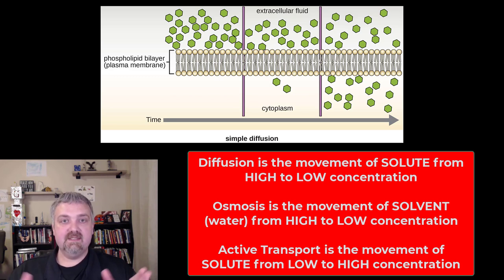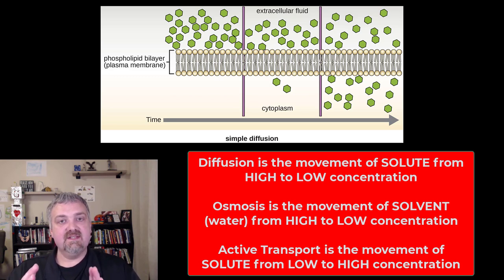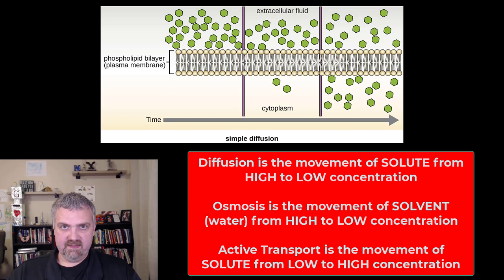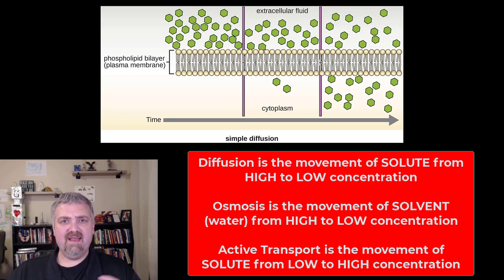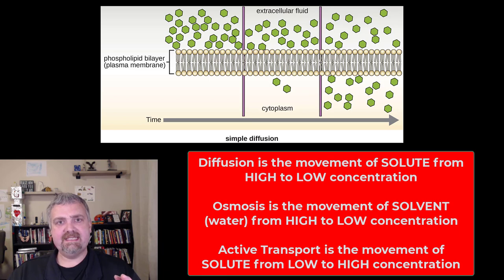Because moving against the gradient requires energy, that's why it's called an active process — it does require ATP. Osmosis is still a passive process, but instead of the solute moving, the solvent, which is water, is moving. It'll make more sense when we go through all three of them, but I like to compare and contrast the three right in one place.